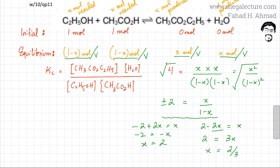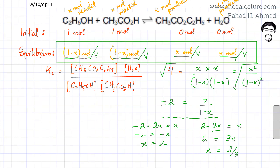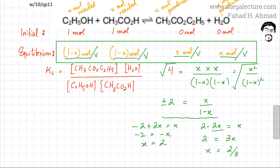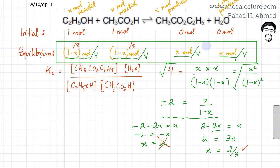I cannot take x = 2, because substituting it into the equilibrium moles gives 1 − 2 = −1 moles of ethanol, which is impossible — moles can never be negative. So I take x = 2/3. Substituting back: ethanol = 1 − 2/3 = 1/3, ethanoic acid = 1/3, ethyl ethanoate = 2/3, and water = 2/3 moles at equilibrium.